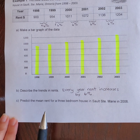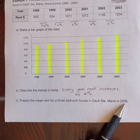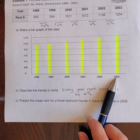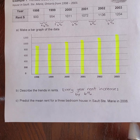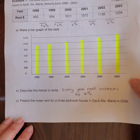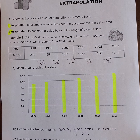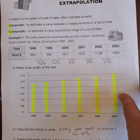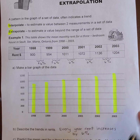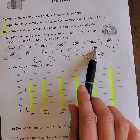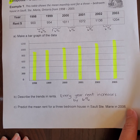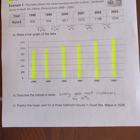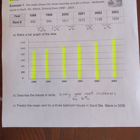For part C it says predict the mean rent for a three-bedroom house in Sault Ste. Marie in 2006. Our data stops in 2003, so to go beyond that data set we need to extrapolate. Because for the past six years the rent has increased by 6% consistently, it is safe to assume that every year after 2003 it will also increase by 6%.